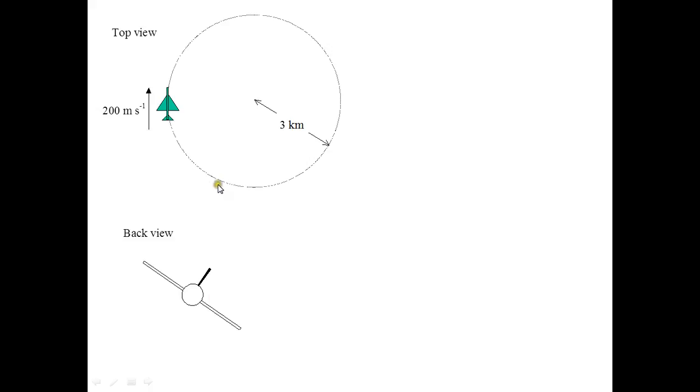Let's take a look at the top view. Remember this is a horizontal circle. The plane is going round in a circle. The radius is given as 3 km, and the speed is given as 200 m per second.